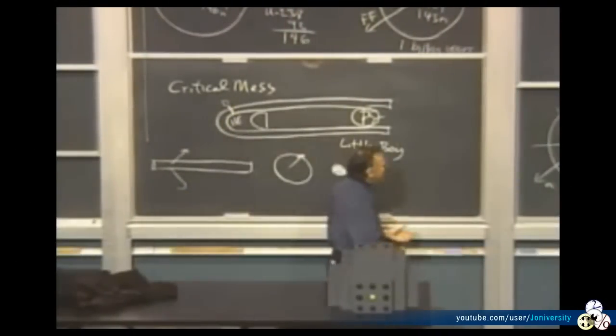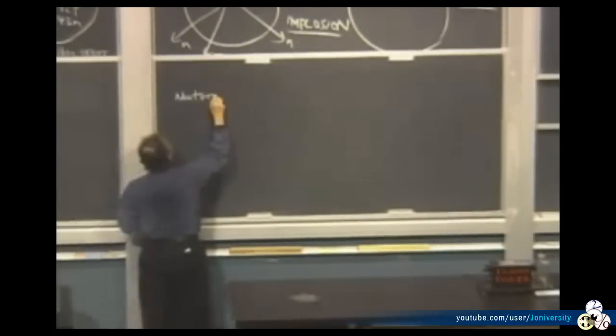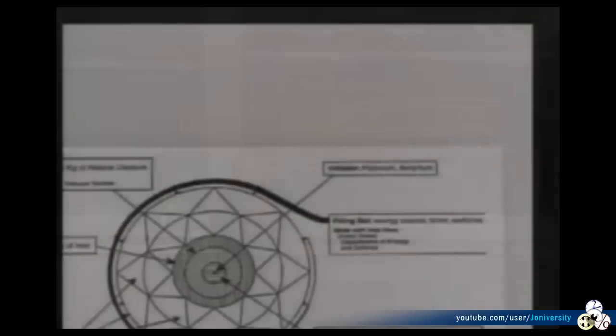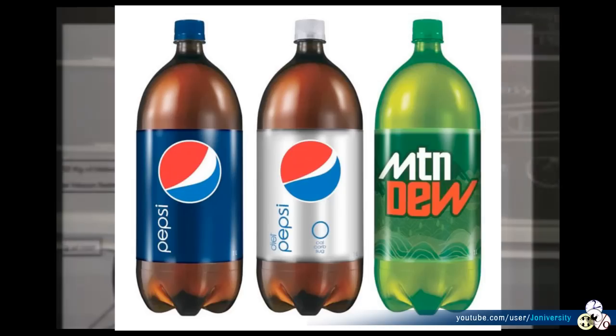You start off with uranium, natural uranium, that you dig out of the ground. Natural uranium is actually quite abundant. How much do you need to make a bomb? 15 to 18 kilograms. Well, let's see. Density of uranium is about 15 to 18, something like that. So 15 to 18 kilograms would be one liter.